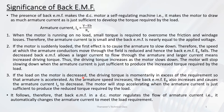If the load on the motor is decreased, the driving torque is momentarily in excess of the requirement so that the armature is accelerated. As the armature speed increases, the back EMF Eb also increases and causes the armature current Ia to decrease. The motor will stop accelerating when the armature current is just sufficient to produce the reduced torque required by the load. Thus, back EMF in a DC motor regulates the flow of armature current — it automatically changes the armature current to meet the load requirement.